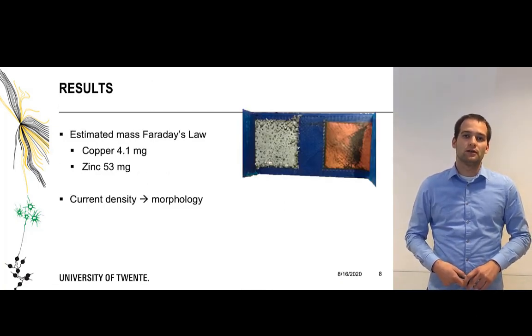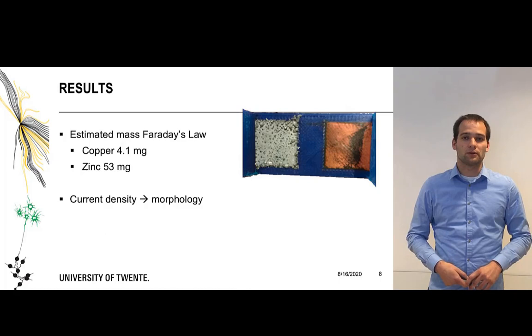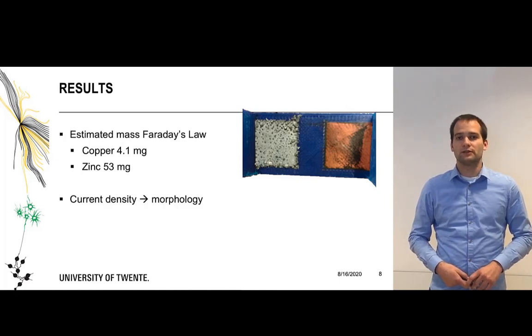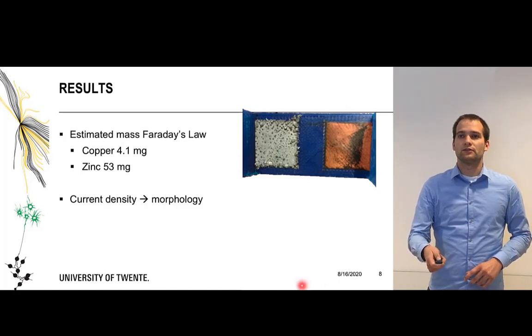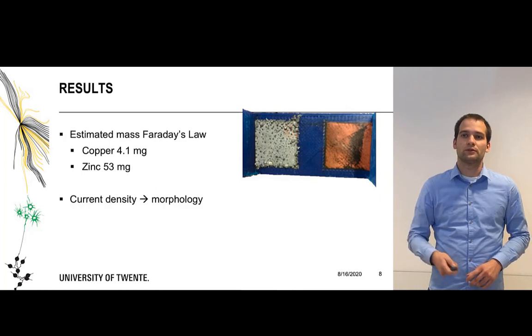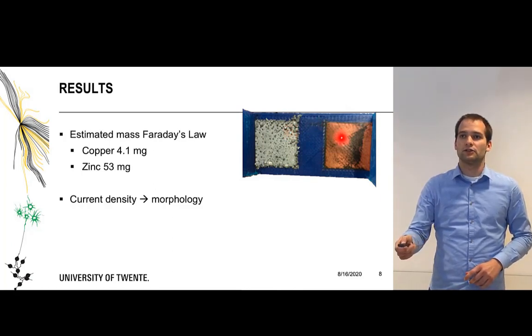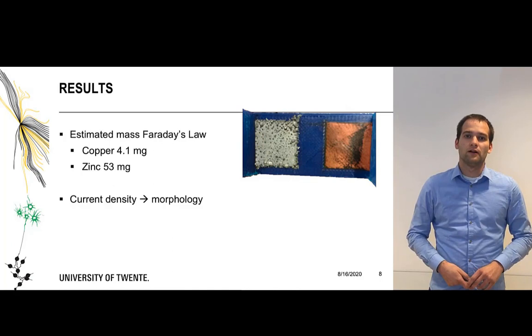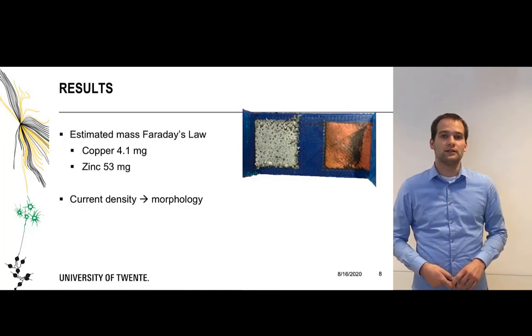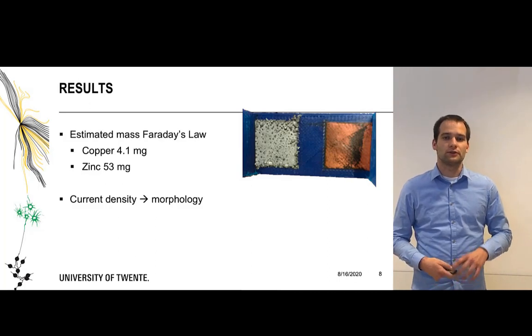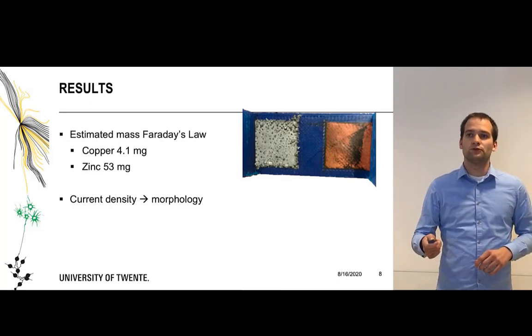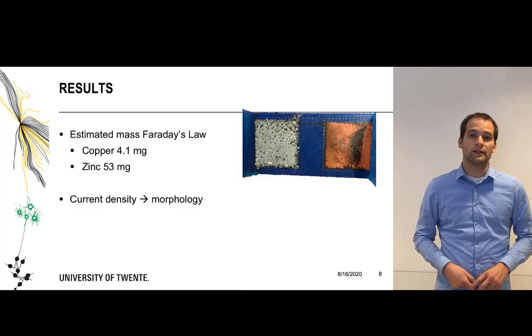The estimated amount of copper was 4.1 milligrams and for zinc it was 53 milligrams. You can see the surfaces where the zinc has a quite rough surface with spherical parts on it and the copper has a smooth surface. The zinc surface is really depending on the current density you use where the current density determines whether you get a rough surface or not and for the copper the smooth surface was mainly achieved by organic additives in the electrolyte during deposition.